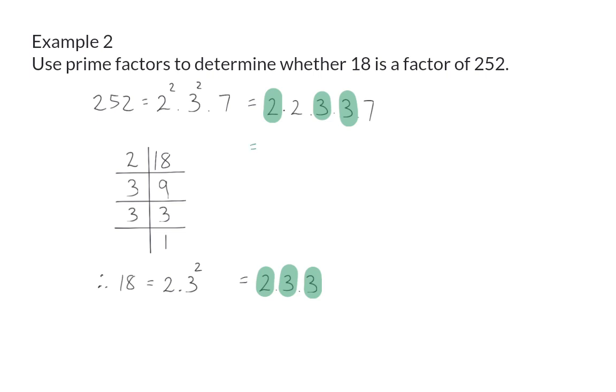If we now take these three numbers, we know that 2 times 3 times 3 will give us 18, and then those values that are left, which is 2 times 7, will form our second factor, and that will be 14. Therefore, 252 is the same as 18 times 14 without a remainder, and that means that 18 is a factor of 252.